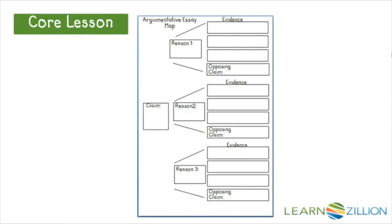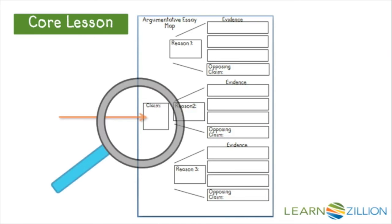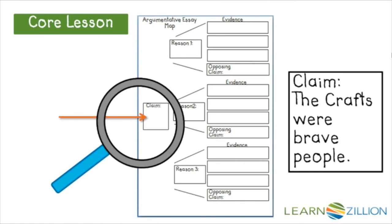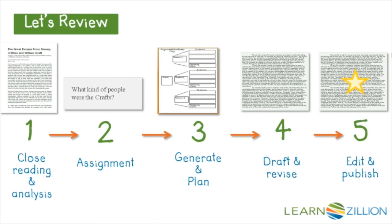Now that I've decided on my claim and determined there is enough evidence to support it, I'll jot my claim on this argumentative essay map. This will help me organize my thoughts and evidence as I continue through the writing process. My claim is that the Crafts were brave people. We just analyzed our assignment and started making our claim, and we filled out the claim portion of our argumentative essay map. We also looked through our close reading notes in the text to verify that our claim could be supported by sufficient evidence. Next, we'll continue to plan our essay in the third step of the writing process. As we plan, we'll continue to fill out the other sections of our map, so keep that in a safe place for later use.